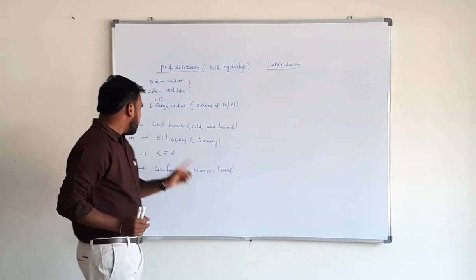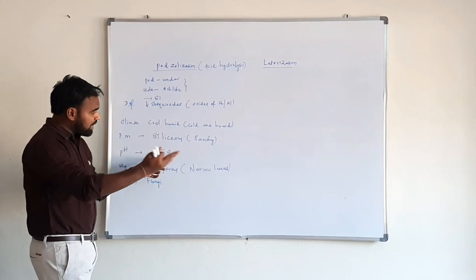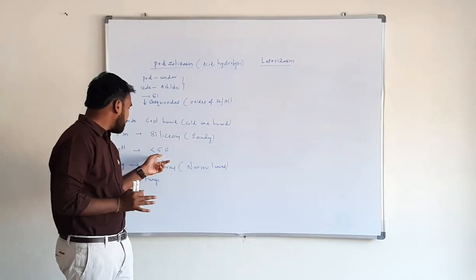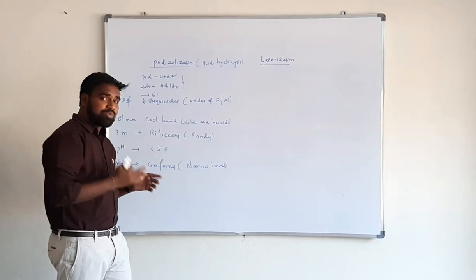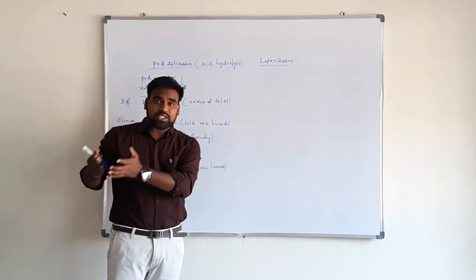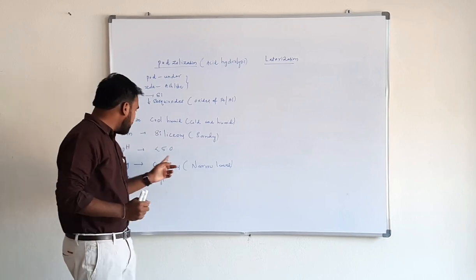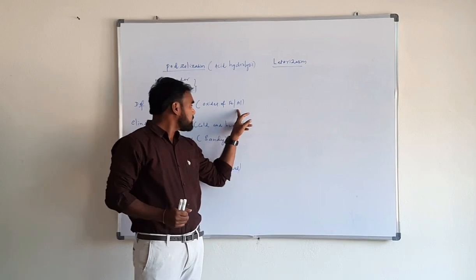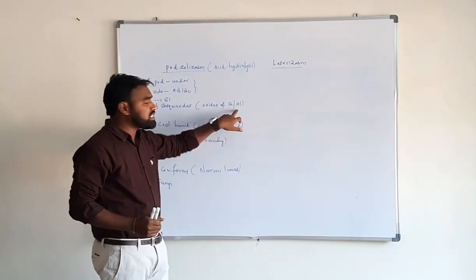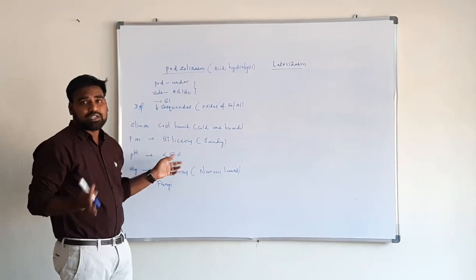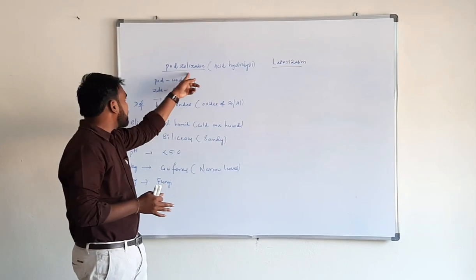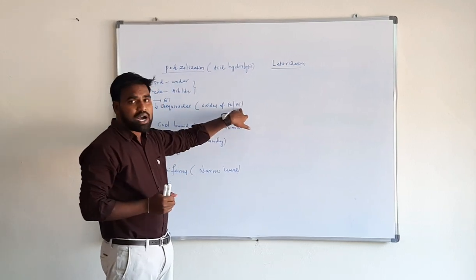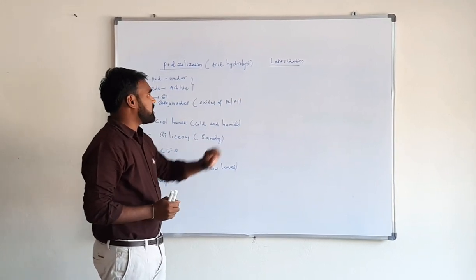When pH is less than 5, silica is highly insoluble and remains on the surface, causing accumulation of silica. At this low pH, iron and aluminum become soluble and are leached downward. That is why, due to low pH in podzolization, silica accumulates and iron and aluminum oxides are leached. This is about podzolization.